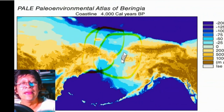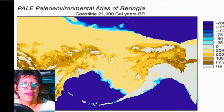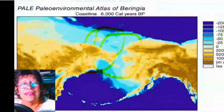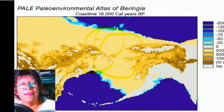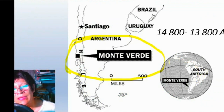You can see there is a bridge that allowed human beings to cross from Asia, but then of course the glacier and the ice disappear. You can see the changes, and we have some more data here.